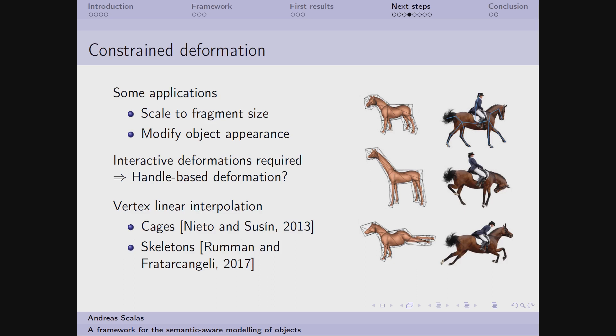Conversely, the constraint deformation is a very difficult concept. I am interested in interactive speed for the deformation, and so I am focusing on the so-called handle-based deformation techniques, which provide some handling abstraction that, once moved or deformed, propagate the deformation on the associated shape following a vertex linear interpolation scheme. There are two typical kinds of handling abstraction, cages and skeletons, both having pros and cons. For example, the skeleton is better suited for imposing structural constraints, while the cages are very suitable for the remaining.